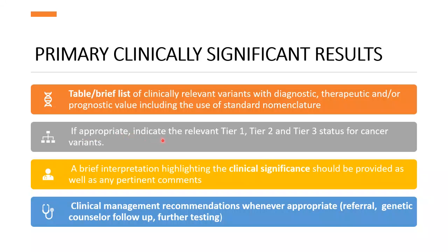If appropriate, indicate the relevant tiering system — tier 1, 2, or 3 — for cancer-specific variants as per AMP guidelines if it is a somatic panel, or follow ACMG guidelines for a germline panel. A brief interpretation highlighting the clinical significance should be provided in the comments, along with clinical management recommendations whenever appropriate, such as referring the patient to a higher center for a comprehensive panel, or a comment about genetic counseling, follow-up, or further testing.